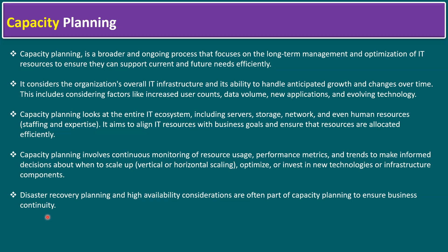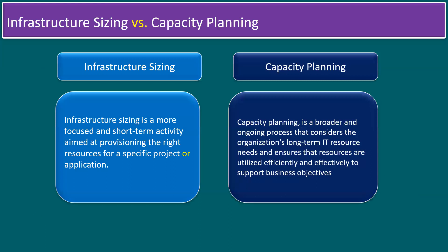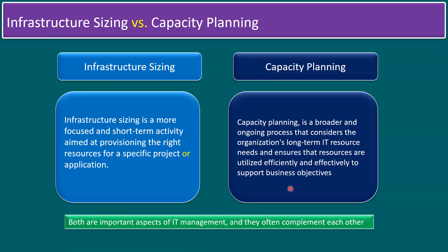The key difference: infrastructure sizing is a short-term activity focused on provisioning the right resources for a specific project or application. Capacity planning is a broader, ongoing process that considers the organization's long-term IT resource needs and ensures resources are utilized efficiently and effectively to support business objectives. Both are important aspects of IT management and often complement each other.